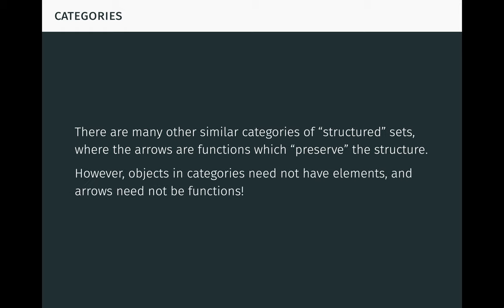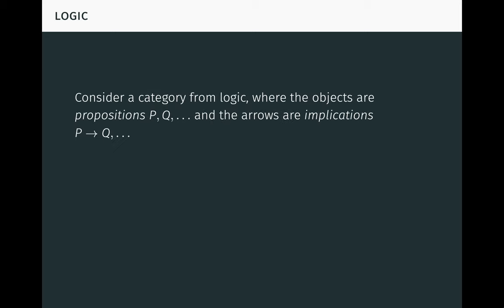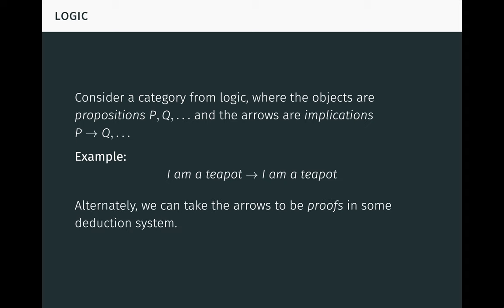However, importantly, the objects in a category need not have elements, and the arrows need not be functions. To see this, consider a category from logic, where the objects are propositions, and the arrows are logical implications between those propositions. For example, the proposition 'I am a teapot' is an object in this category, and the implication 'I am a teapot implies I am a teapot' is an arrow in this category. Instead of implications, we could take the arrows to be formal proofs in some deduction system. In this case, there may be more than one arrow between two propositions.